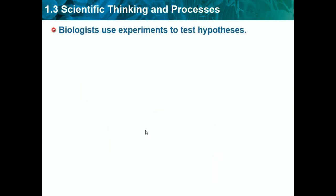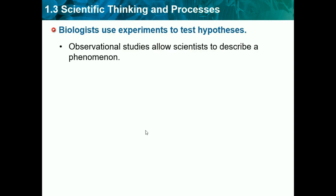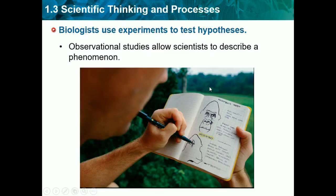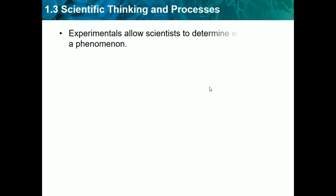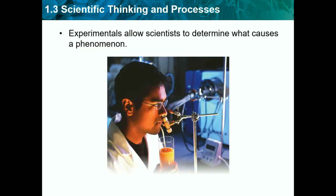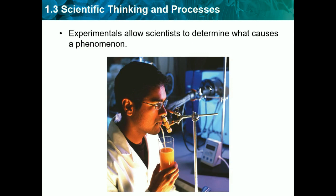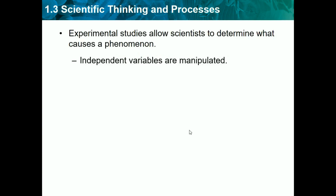Biologists use experiments to test hypotheses. Observational studies allow science to describe a phenomenon — another way to learn about our world is through observations. Experiments allow scientists to determine what causes a phenomenon. So if we want to figure out what causes certain things, we would make experiments, as shown here. Experimental studies allow scientists to determine what causes a phenomenon.